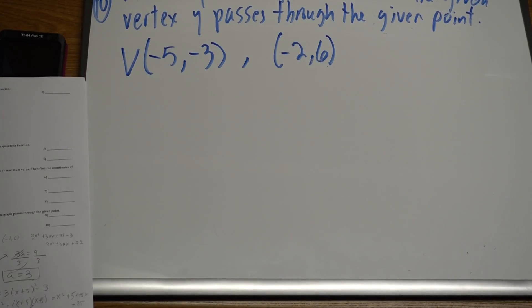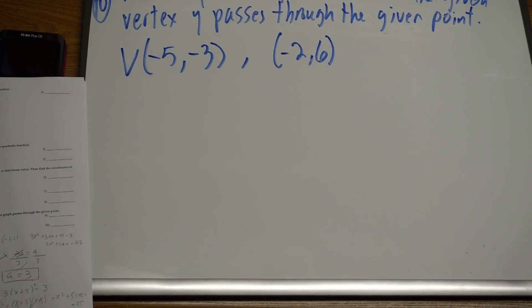Let's solve problem number 10. If you notice number 9, it has an error in the review that I gave you because it didn't print out the point that it's going through. It's just giving you the vertex but not the point.